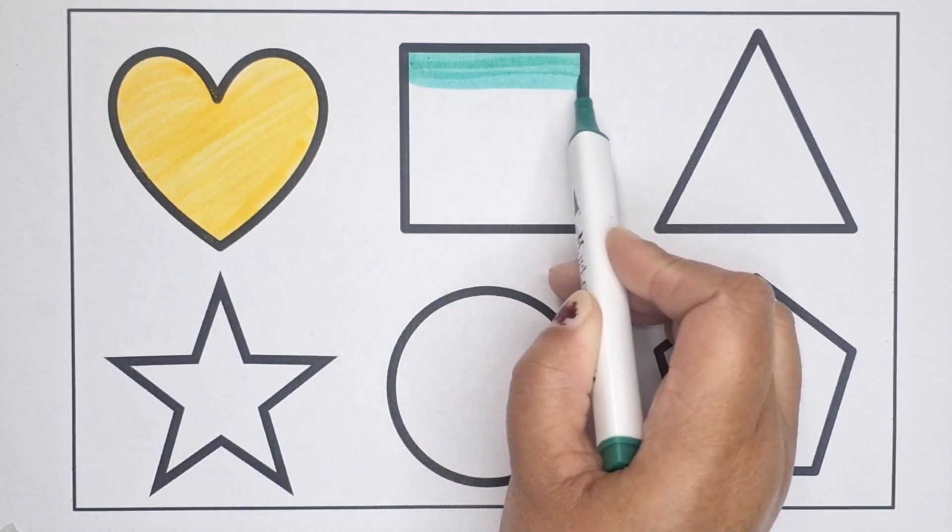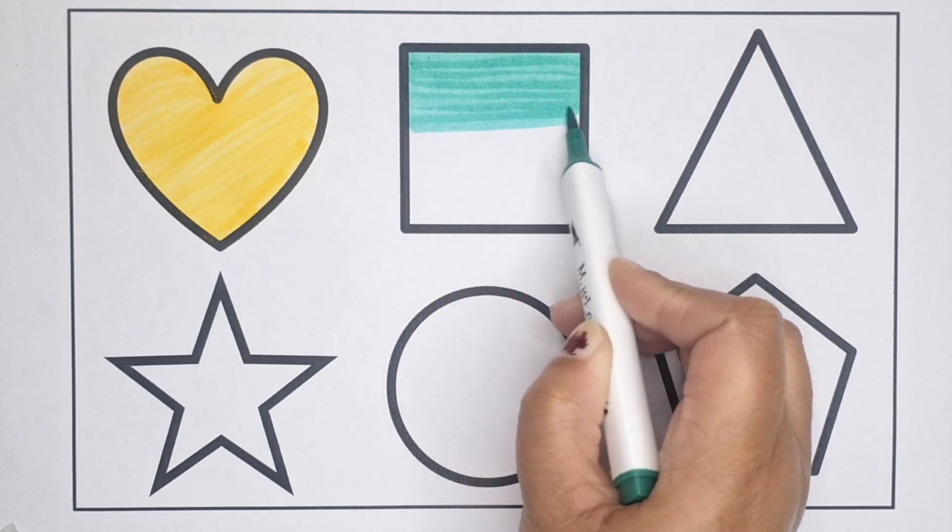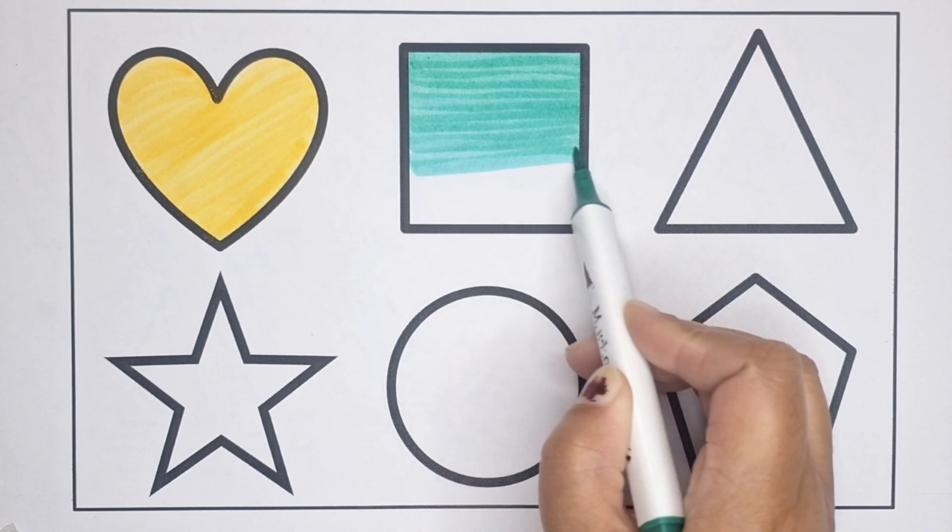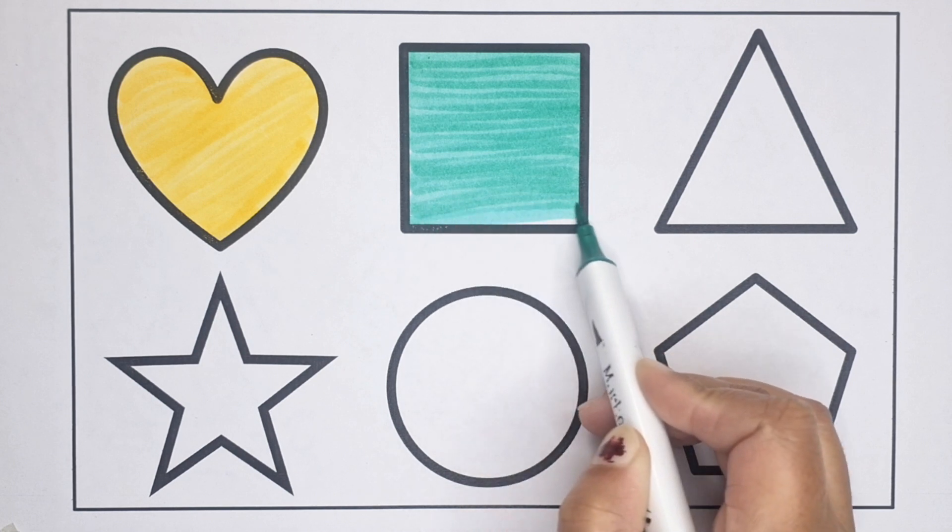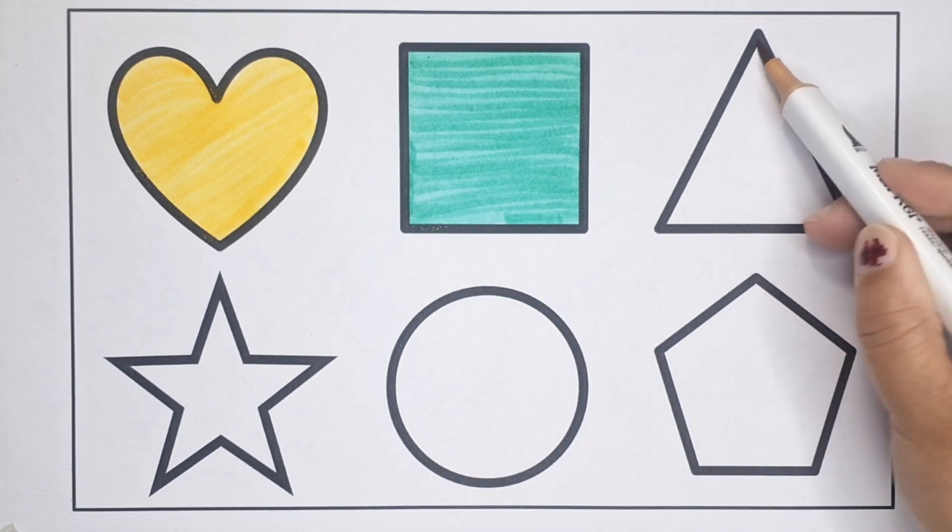Dark green color, this is square. The shape is square.